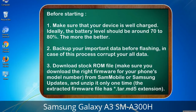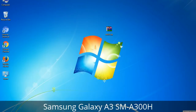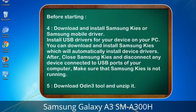Download the firmware from Sammobile or Samsung Updates and unzip it only one time. The extracted firmware file will have a *.tar.md5 extension. 4. Download and install Samsung Kies or Samsung mobile driver to install USB drivers for your device on your PC. Samsung Kies will automatically install device drivers. After installing, close Samsung Kies and disconnect any device connected to USB ports — make sure Samsung Kies is not running. 5. Download Odin 3 tool and unzip it.